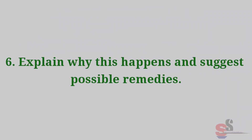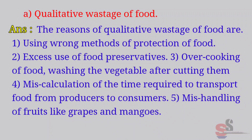Question 6: Explain why this happened and suggest possible remedies. A. Qualitative wastage of food. Answer: The reasons for qualitative wastage of food are: using wrong methods of protection of food, excess use of food preservatives, overcooking of food, washing vegetables after cutting them, miscalculation of the time required to transport food from producers to consumers, mishandling of fruits like grapes and mangoes.